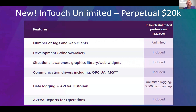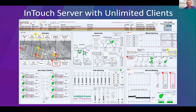Something we're very excited about is the introduction of InTouch Unlimited Perpetual. What this includes is everything you need for SCADA: unlimited clients for InTouch off of a server, development with WindowMaker included, the Situational Awareness graphics library, all the communication drivers, the Aviva Historian and Aviva Reports — all for a one-time cost of $20,000. Aviva has gotten incredibly aggressive with the HMI SCADA market so folks can continue to use InTouch and make it very affordable.